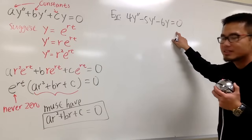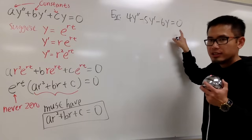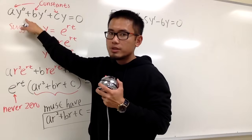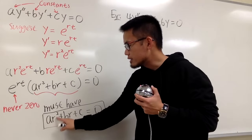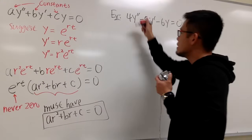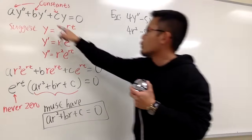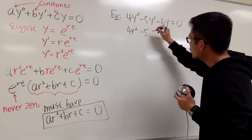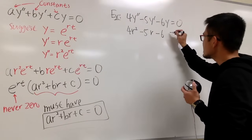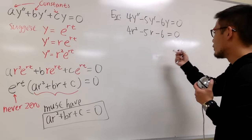Let's solve 4y'' − 5y' − 6y = 0. The first step is to change it to its corresponding characteristic equation. y'' corresponds to r², so the first term gives 4r². Then y' corresponds to r, giving −5r. And y has no r, so just −6. We must solve the quadratic 4r² − 5r − 6 = 0, whichever way you'd like.